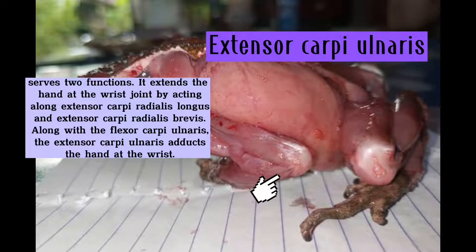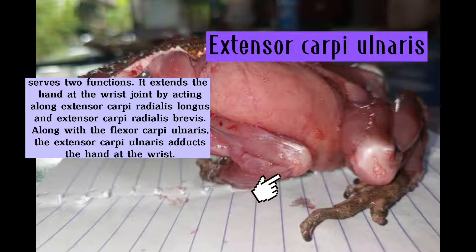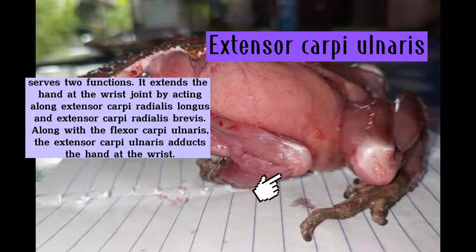The extensor carpi ulnaris serves two functions. It extends the hand at the wrist joint by acting along with extensor carpi radialis longus and extensor carpi radialis brevis. Along with the flexor carpi ulnaris, the extensor carpi ulnaris also abducts the hand at the wrist.